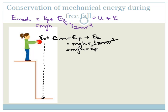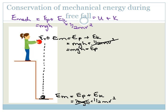At the bottom, just as the ball hits the ground, E_mech is still equal to EP plus EK, which equals MGH plus one-half MV squared. But now it has no height — therefore there is no potential energy. It's only got kinetic energy. So the total mechanical energy at the bottom equals the kinetic energy.